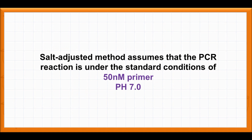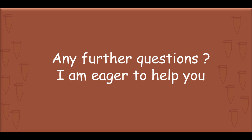Note that the salt-adjusted method assumes that the PCR reaction is under standard conditions of 10 nanomolar primer and pH equals 7. If you have any questions, I'm eager to help you.